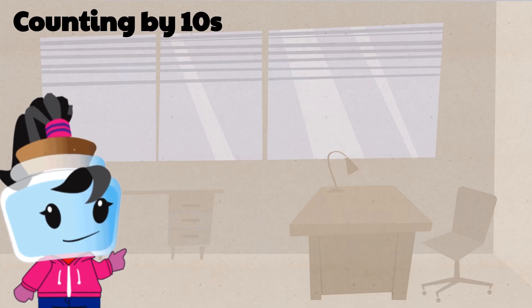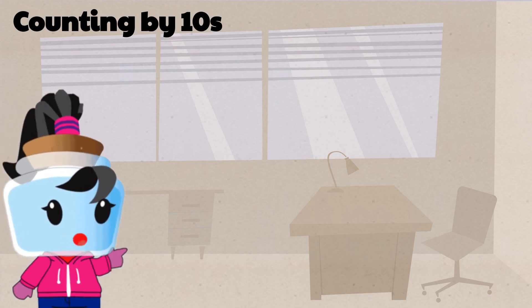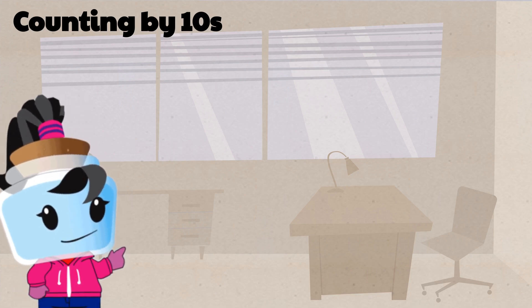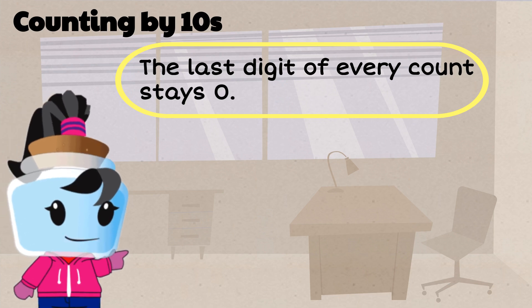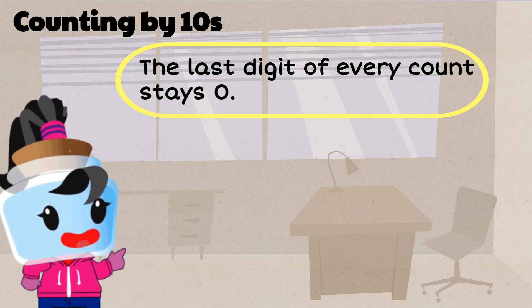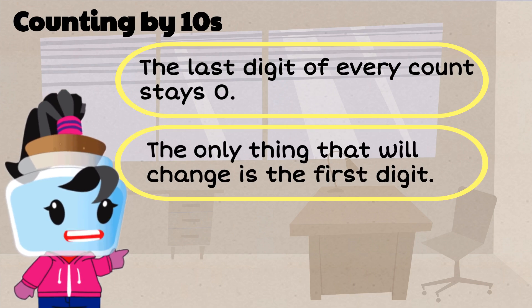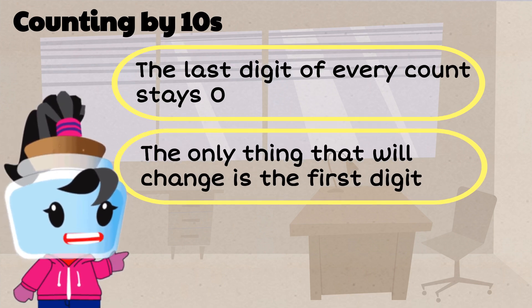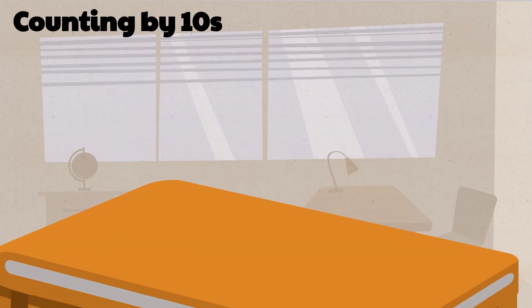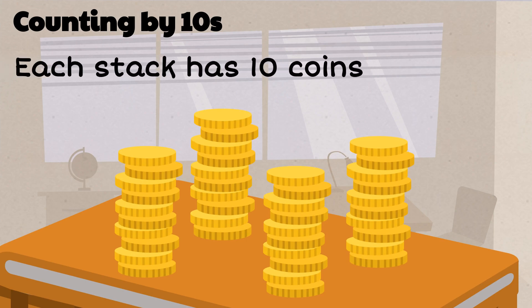Let's move on to counting by tens. This time the last digit of every count stays zero, and the only thing that will change is the first digit. To understand this more, help me count these coins — each stack has ten coins.